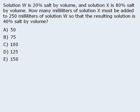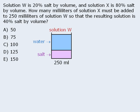Let's begin by sketching 250 milliliters of solution W with the water and salt separated. The question tells us that solution W is 20% salt by volume. Since 20% of 250 milliliters is 50 milliliters, we know that there is 50 milliliters of salt in the solution. This means that the remaining 200 milliliters of the solution must be water.